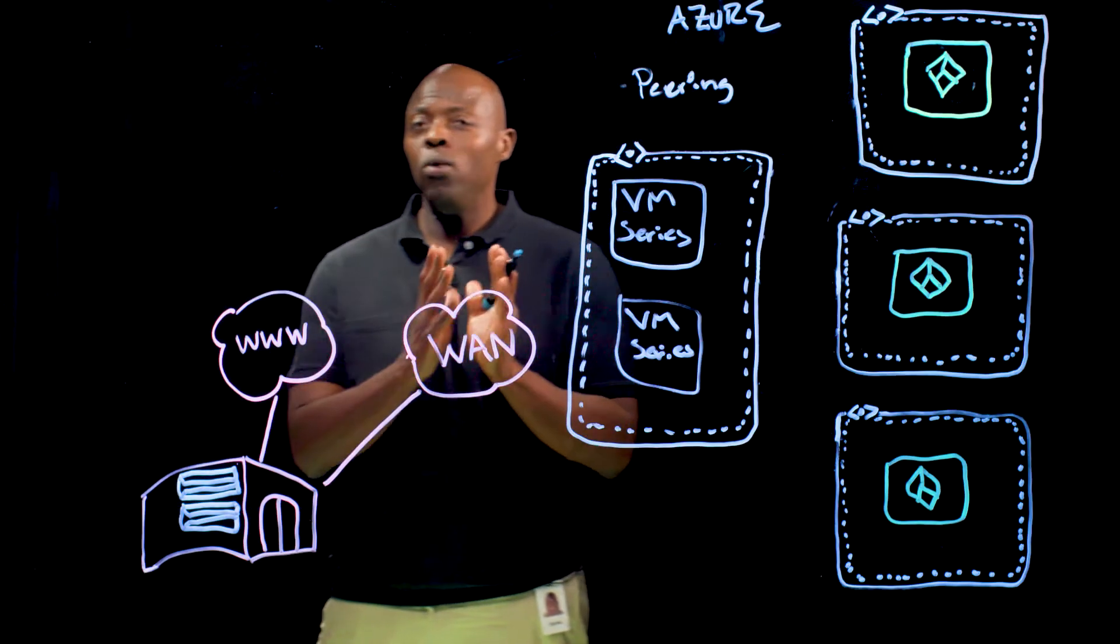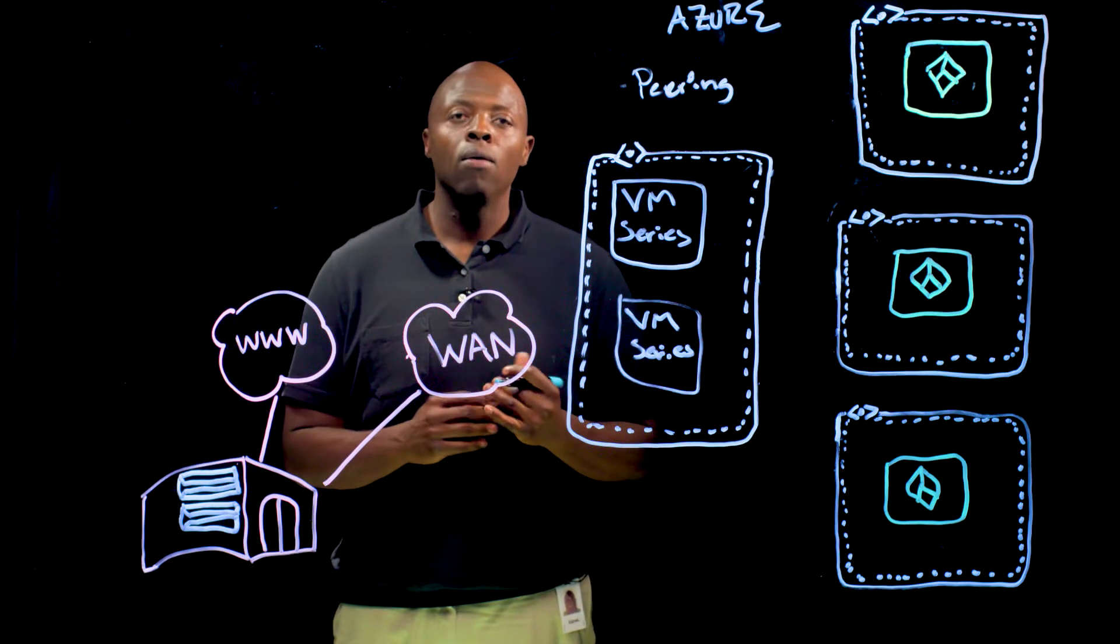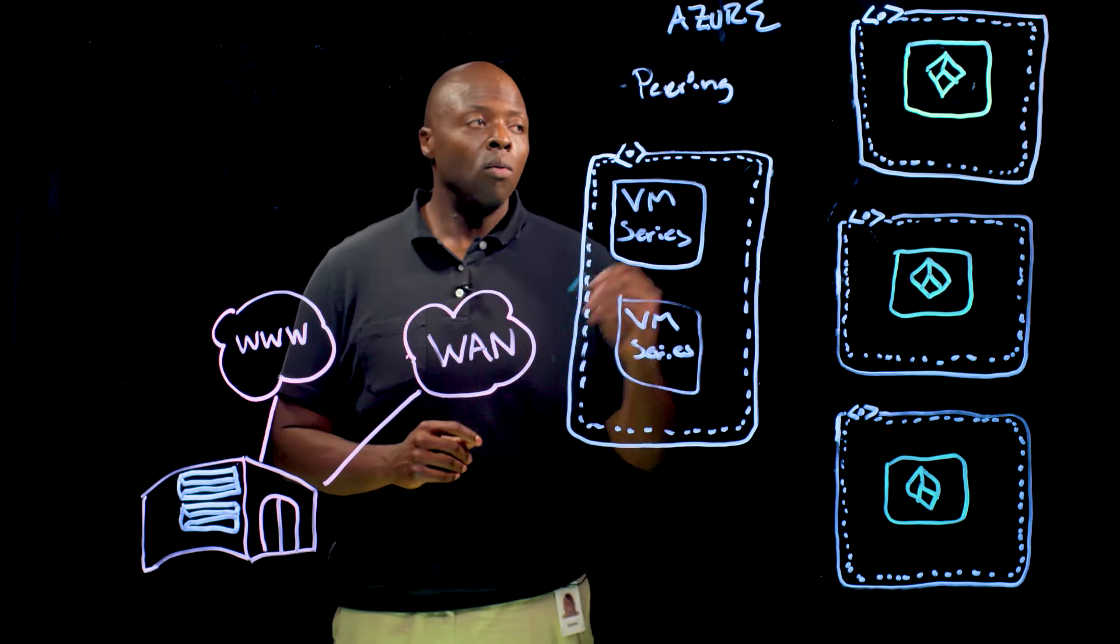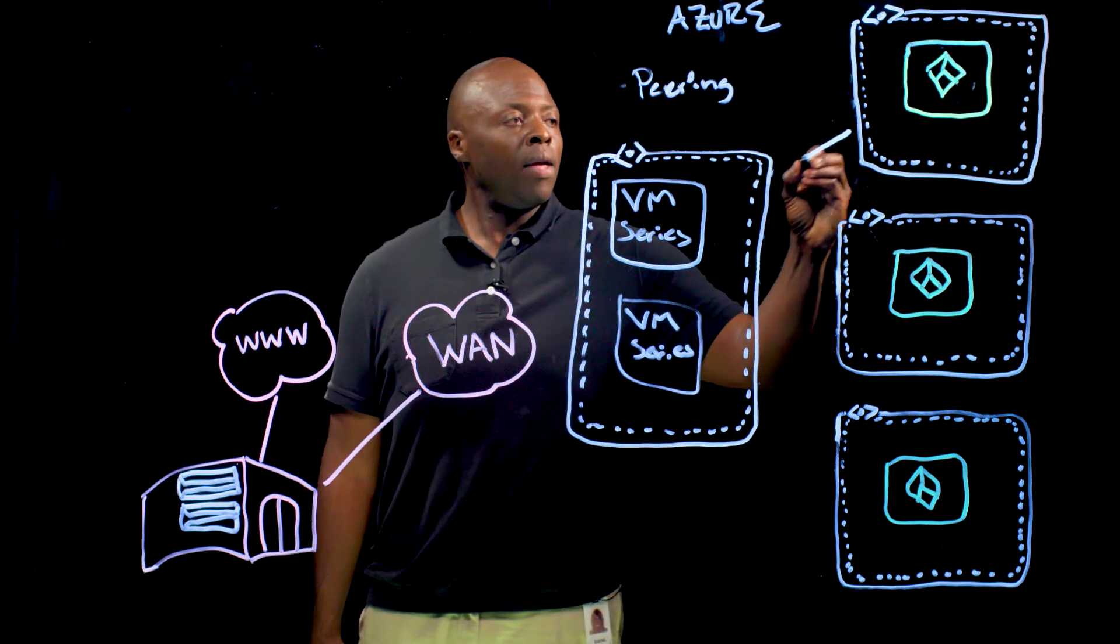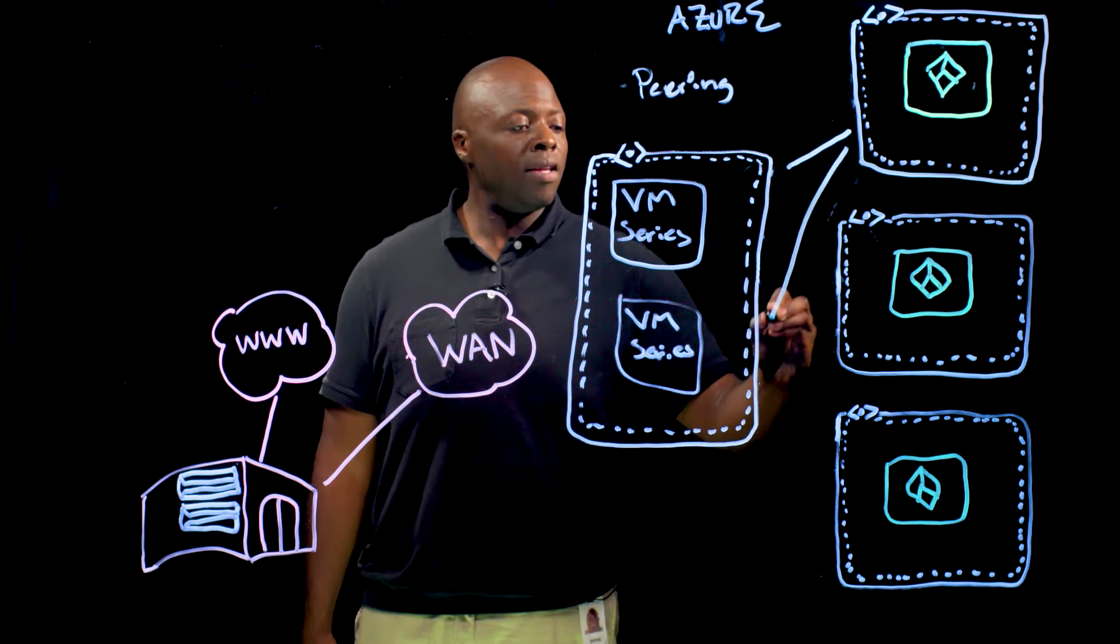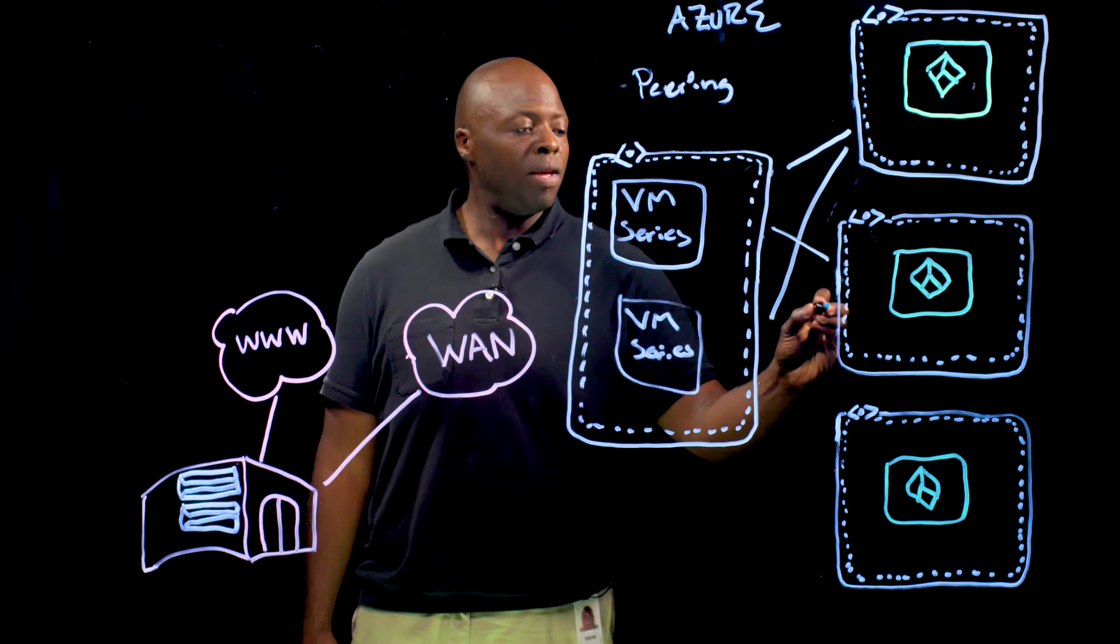For those of you that are not familiar with VNet peering in Azure, virtual network peering is an easy way to connect virtual networks throughout the Azure framework. It also provides high availability and you're leveraging the Azure framework and all the capabilities of the cloud to accomplish this. So with virtual network peering, we don't need an overlay network, we don't need dynamic routing. We simply peer each virtual network and high availability is automatically accomplished.